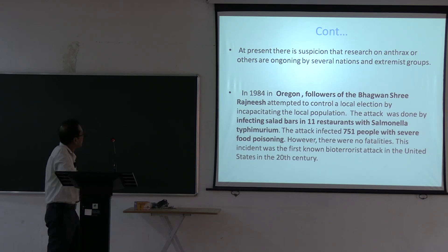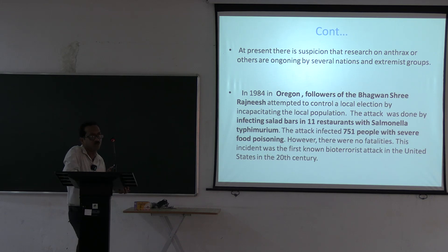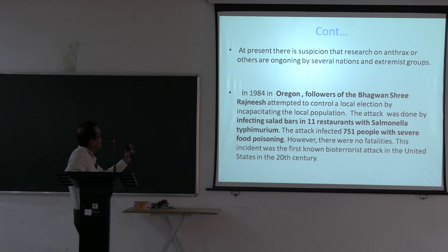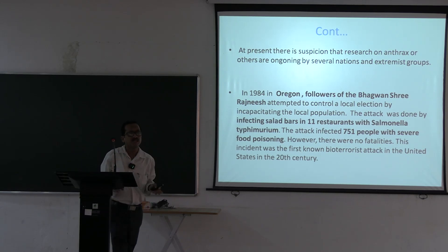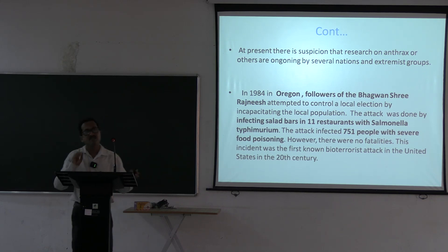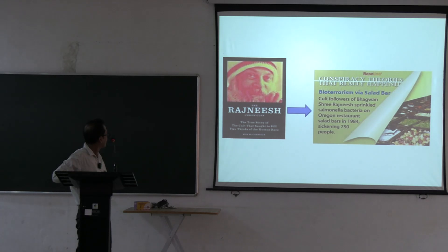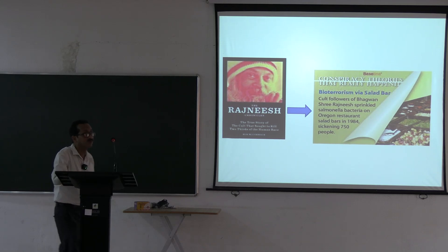In 1984, the infamous Bhagwan Sri Rajneesh cult attempted to control a local election by infecting salad bars with Salmonella typhi. The attack infected 751 people with severe food poisoning. This incident became known as 'bioterrorism via salad bar.'